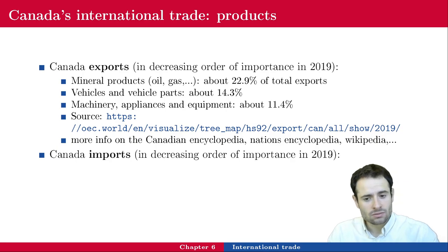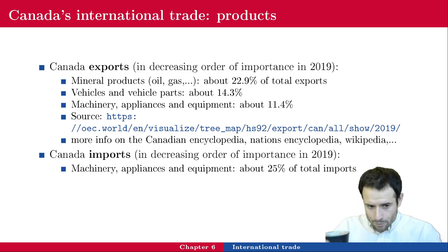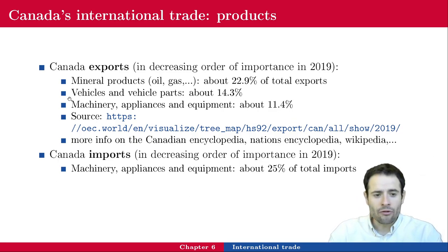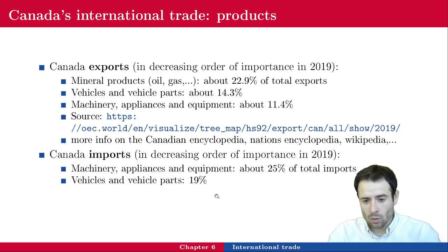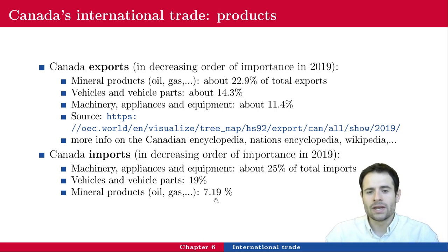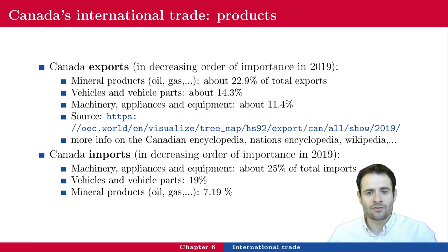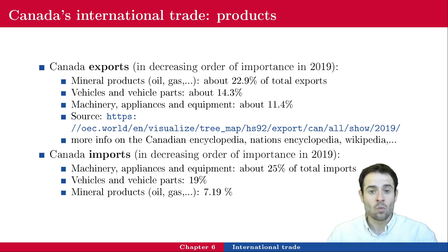Canada's main import is machinery, appliances, and equipment — about 25% of total imports. Vehicles and vehicle parts are second at almost 20%. Mineral products — oil and gas — represent 7.19% of total imports, usually in a different form than what Canada exports. It is interesting how Canada exports and imports the same categories of goods; within one category there is a detailed list — crude oil versus refined oil, for example — with different subcategories within each type of good.